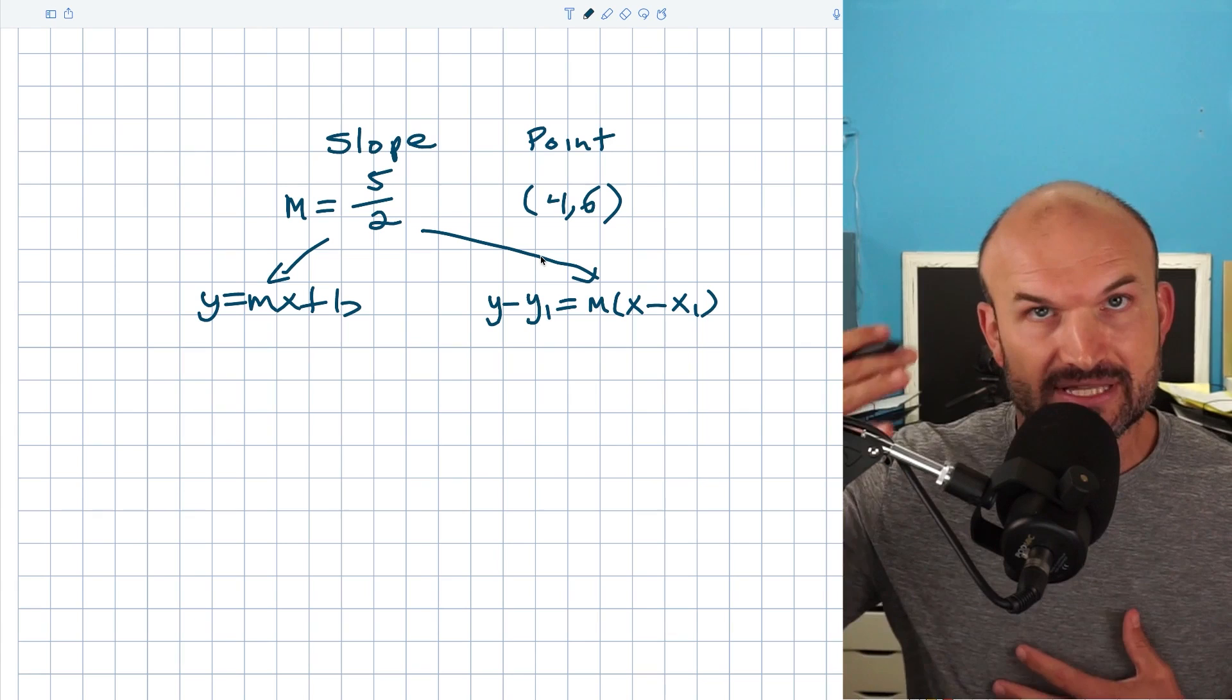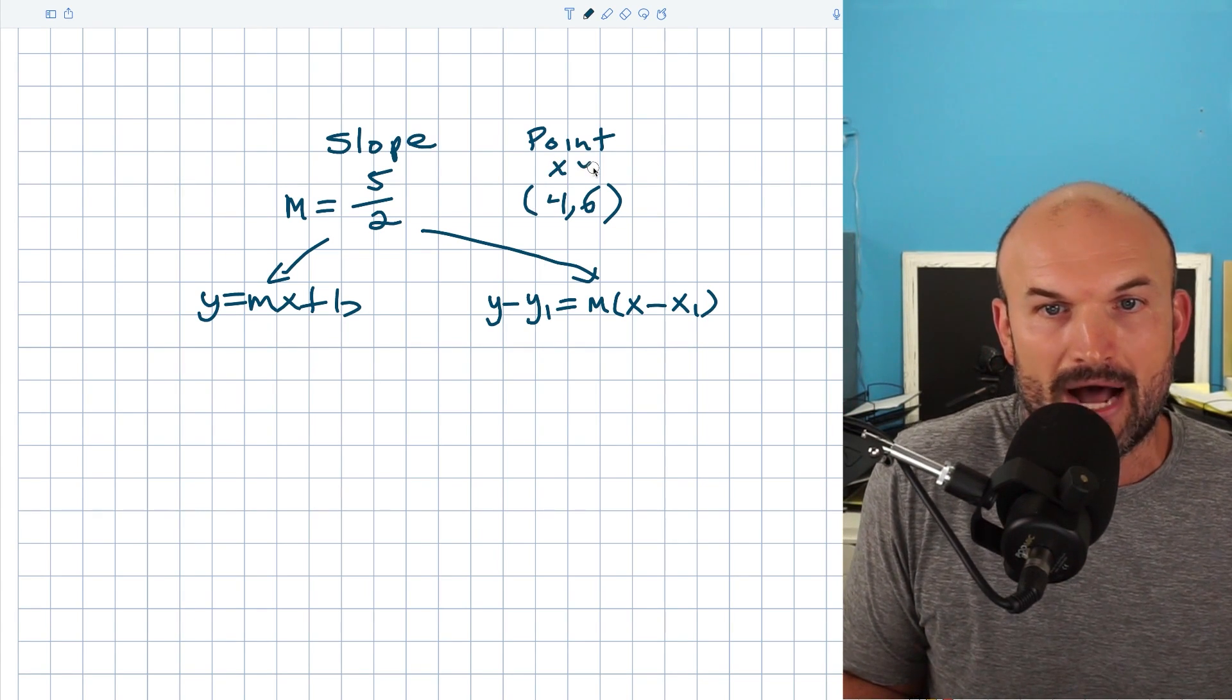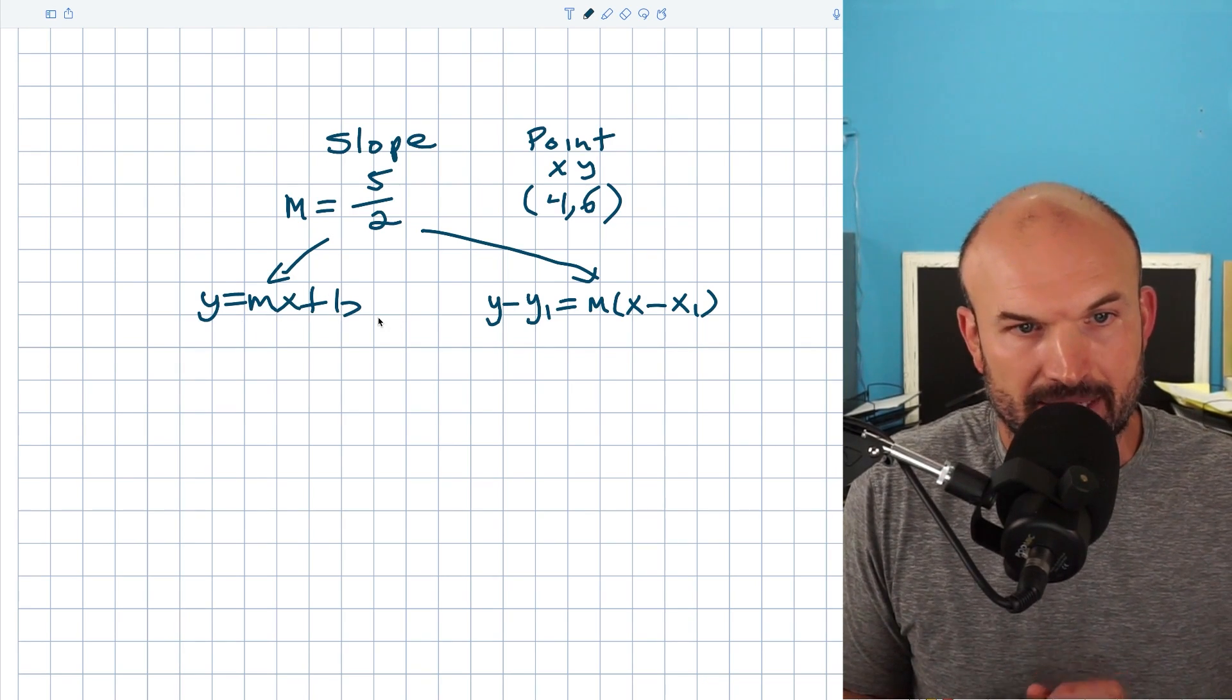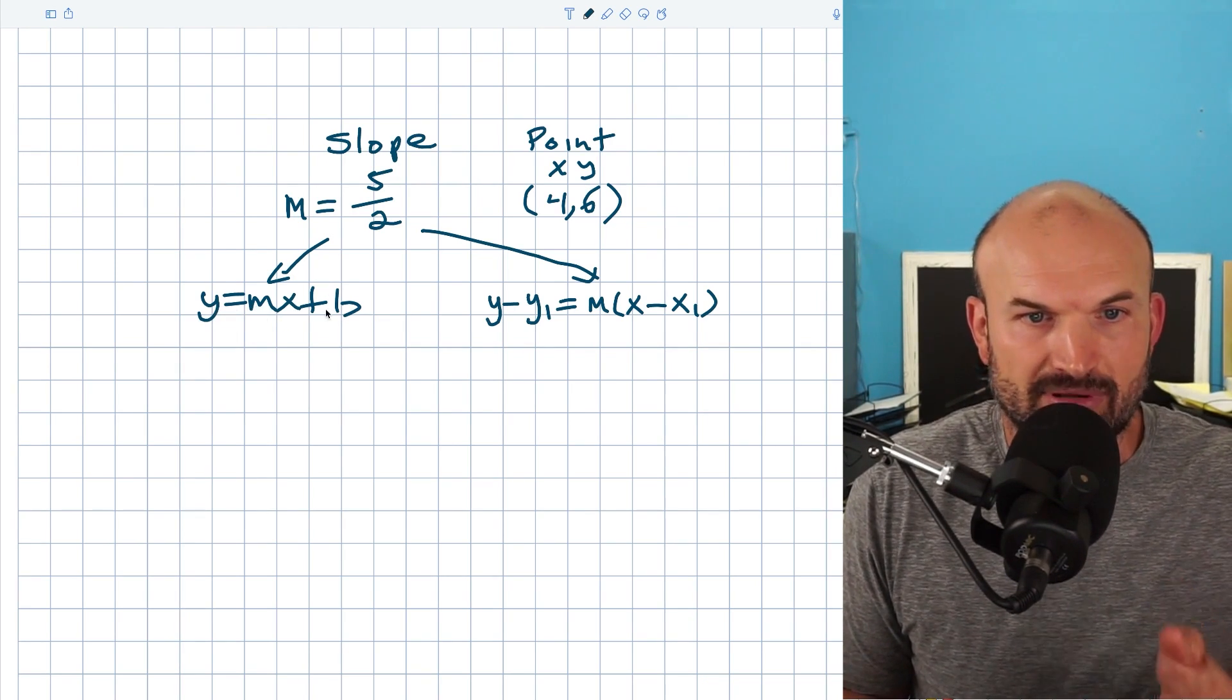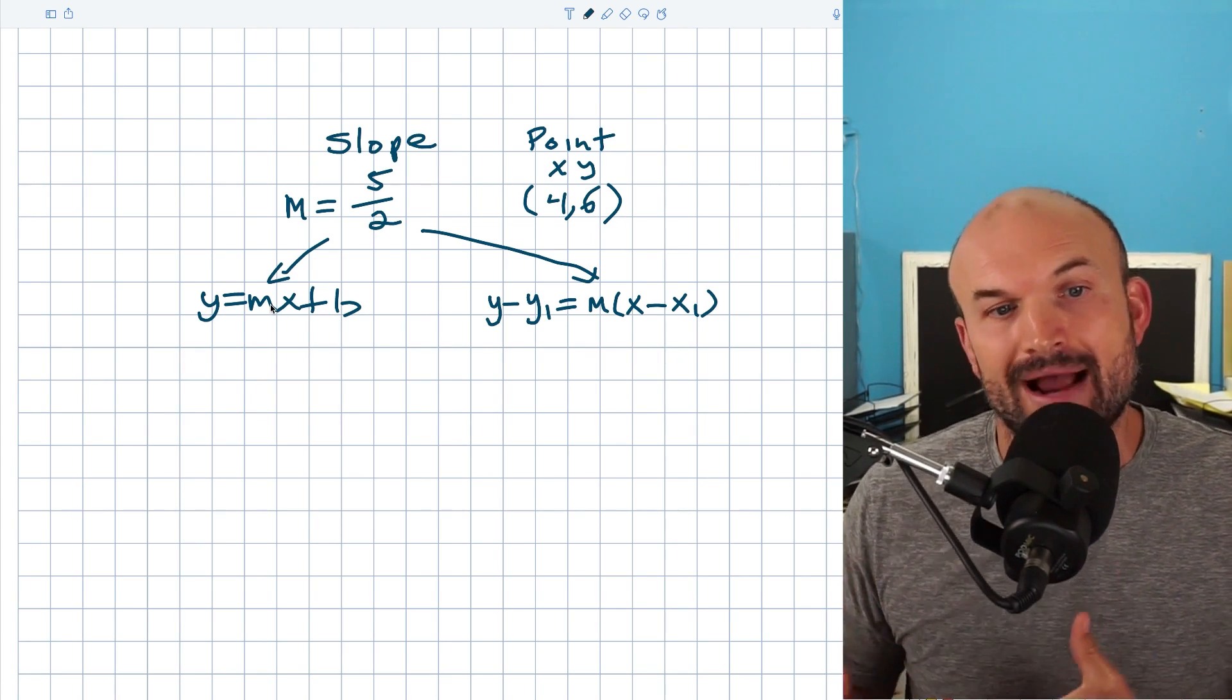Now, when we're given a point, the first thing we always think about a point on a coordinate grid is an x and a y. Let's go and tackle the slope-intercept form. Because when you look at this y equals mx plus b, the y and the x actually represent any x and y coordinates that lie on the graph.